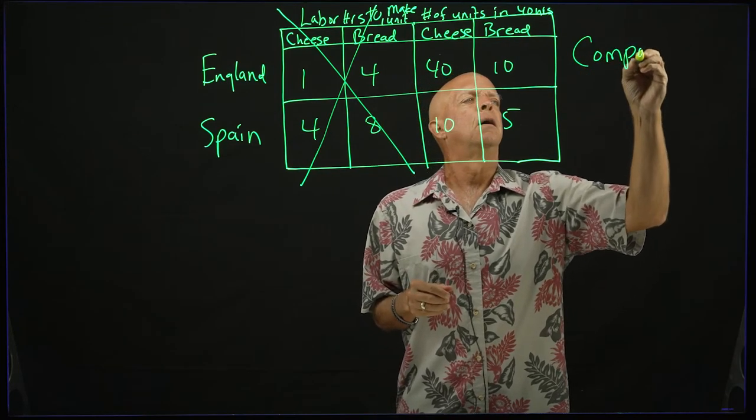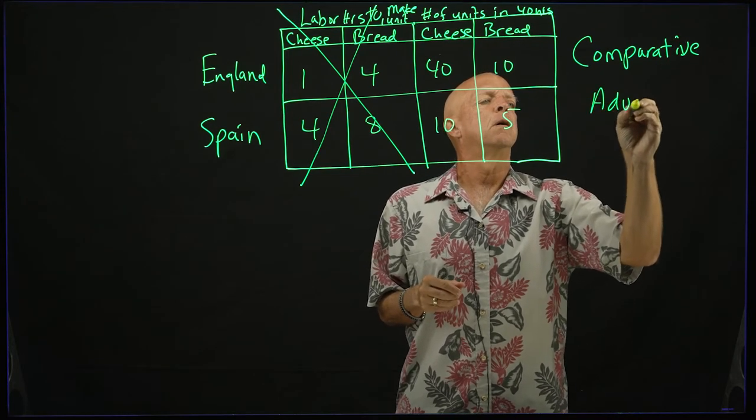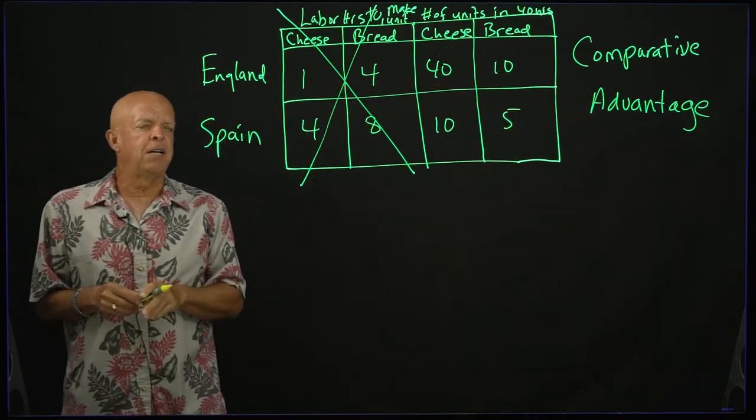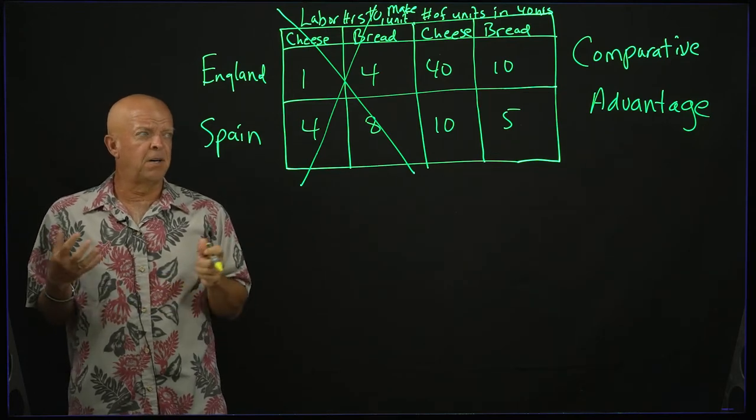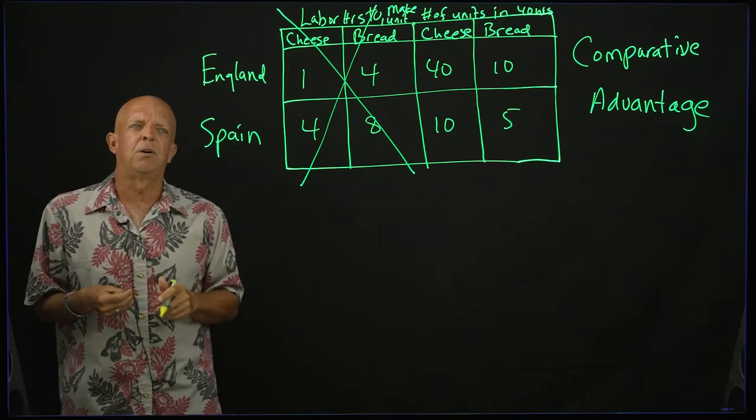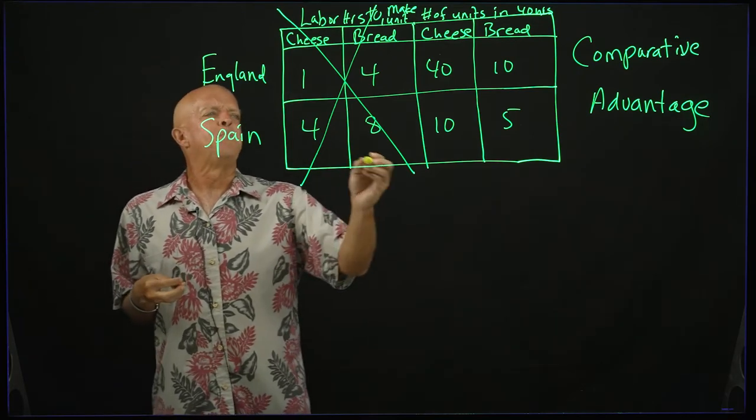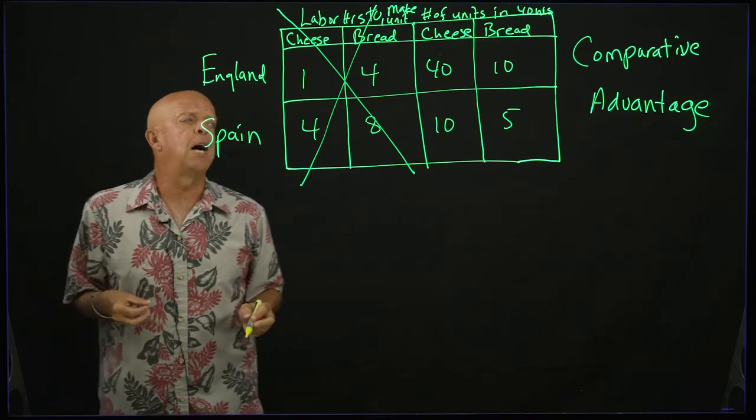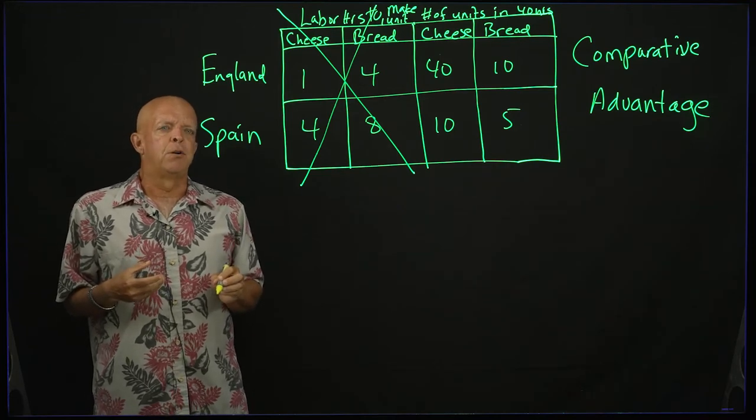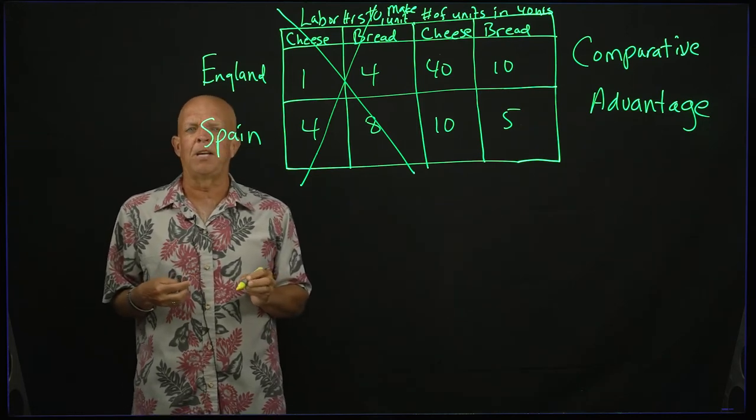So the thing to do is to go to something called comparative advantage. Now comparative advantage is the amount, the amount that you're giving up to get one item of something. So what we're going to find out is who gives up the least to produce a particular item. So to do this, we know that England has an absolute advantage in both. We've got to figure out the opportunity cost for England to produce a unit of cheese and an opportunity cost to produce a unit of bread and the same for Spain.